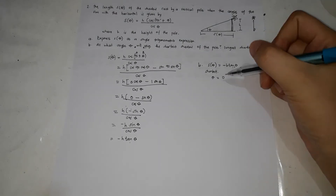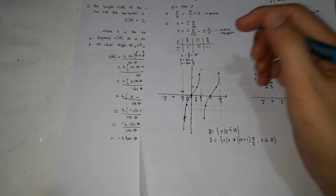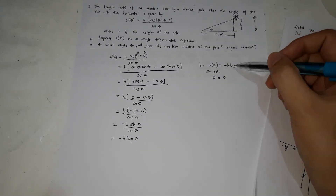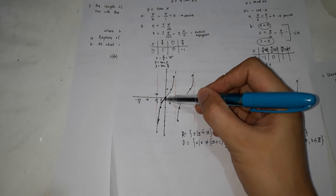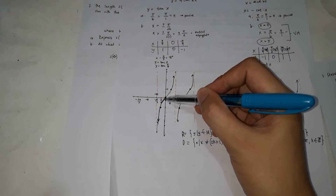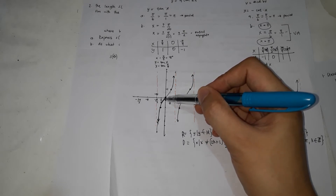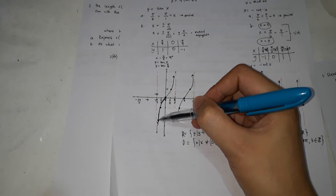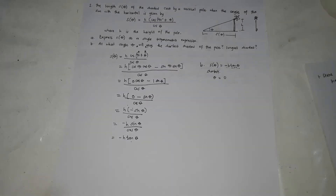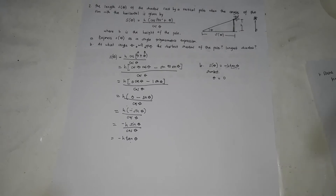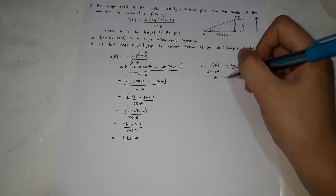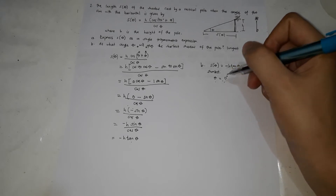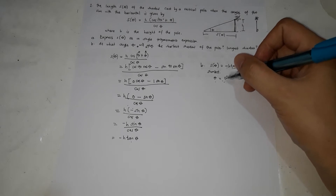However, if zero is not considered, as the value of θ gets closer to zero from the negative side, the shadow becomes shorter — since negative times negative gives a positive length. So for the shortest shadow, θ should approach 0 degrees, making the shadow approach zero.